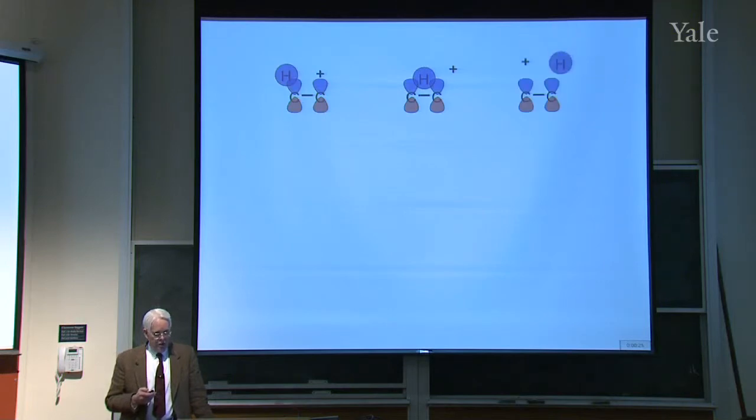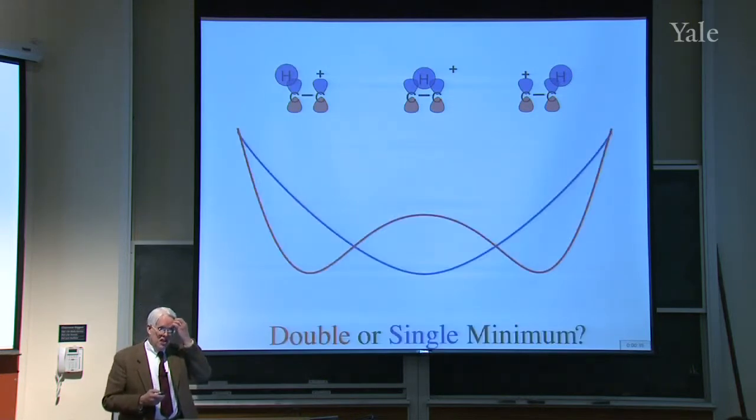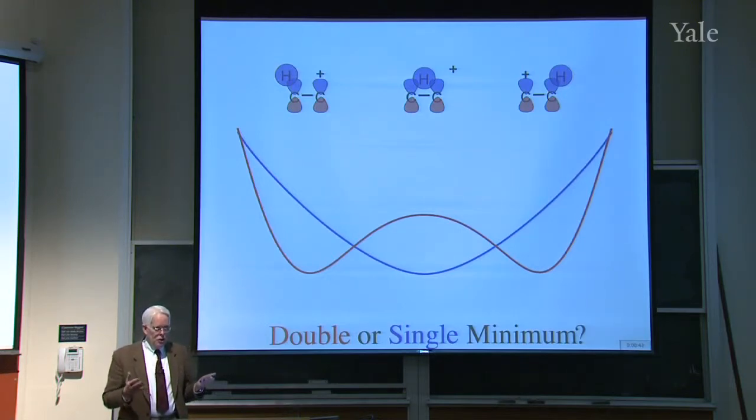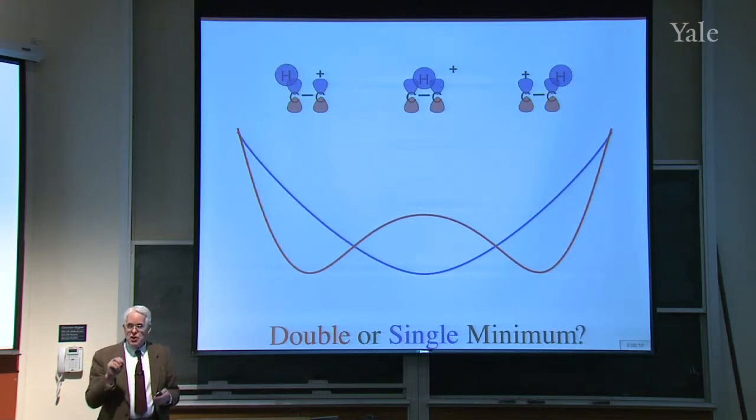We could also imagine bringing the hydrogen down on one end of an alkene to form a normal cation. It could go on the other end too. The question is, you could get from one to the next by shifting the hydrogen from left to right. That's the rearrangement. Is it a single minimum or double minimum?